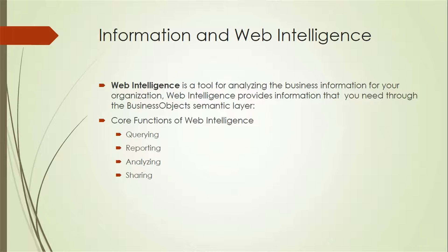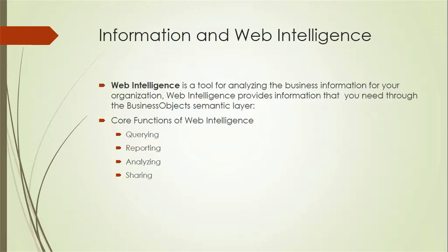What is information for you? Information is anything like a name, a state, an address, or a phone number. We need to use this information for our business. Web Intelligence is a tool for analyzing business information for your organization. Web Intelligence provides information through the Business Object semantic layer — it's a tool SAP has provided to display and analyze data available in the database. The core functions of Web Intelligence are querying, reporting, analyzing, and sharing.